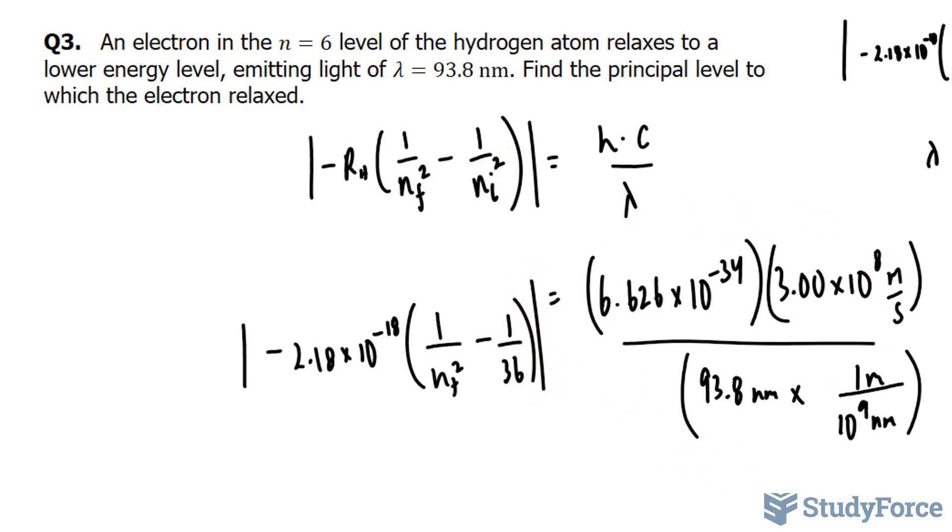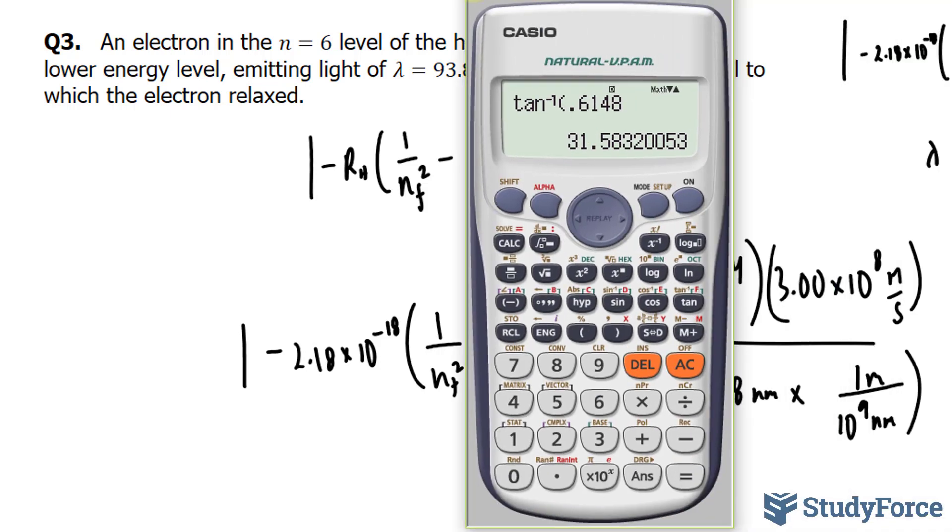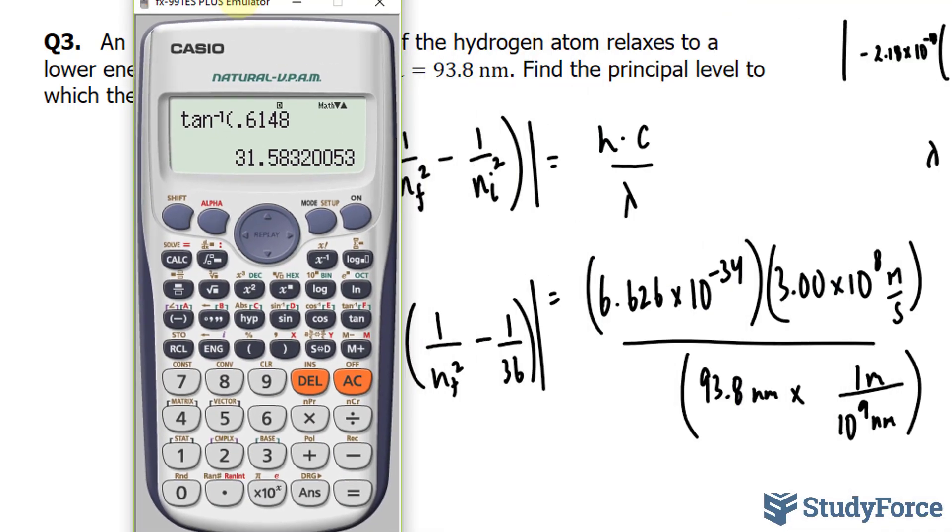Now, let's find out what the right side is equal to. We'll use our calculator. We have the top part is 6.626 times 10 to the power of negative 34. That's being multiplied to the speed of light. And if we divide this by the number underneath, which is 93.8 divided by 10 to the power of 9.